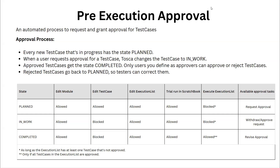In this session, we are going to talk about a feature called pre-execution approval. This is one of the latest features introduced in recent versions of Tosca, so you will not find this in earlier versions. But if you have installed Tosca 2024 and above, then you should have this particular feature.